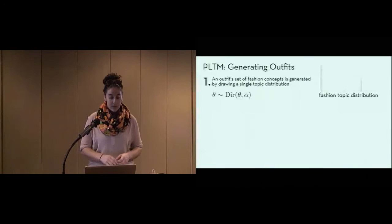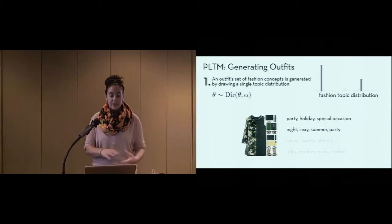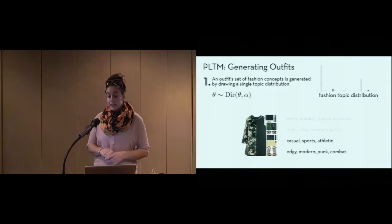To better understand how this works, I'll first explain how an outfit is created under the PLTM. First, you draw a set of fashion concepts, or a fashion topic distribution, for your new outfit from a Dirichlet with parameter alpha. In drawing this fashion topic distribution, some concepts will be more likely, like party, sexy, and holiday for the dressy outfit shown here, and some concepts will be much less likely, like sportswear or edgy punk rock concepts for the same outfit.